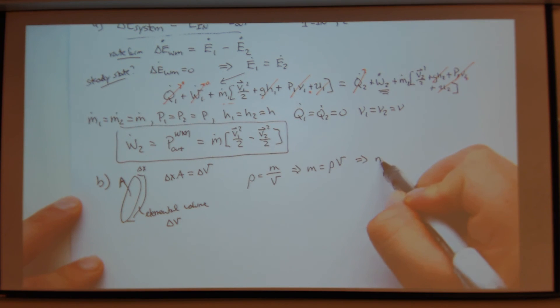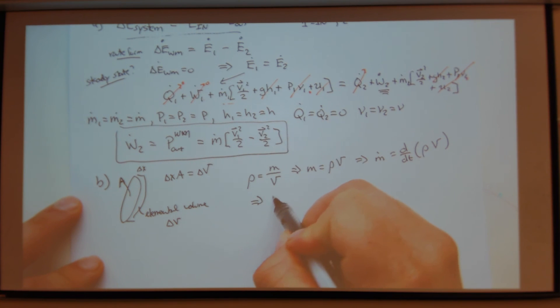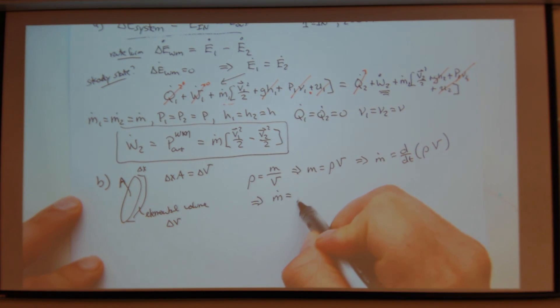So the way I like to look at it is rho equals M over V. Which implies M equals rho times V. Which implies that M dot equals D DT, rho V. And I know that the density isn't changing. And so, which then gives me M dot equals rho V dot.